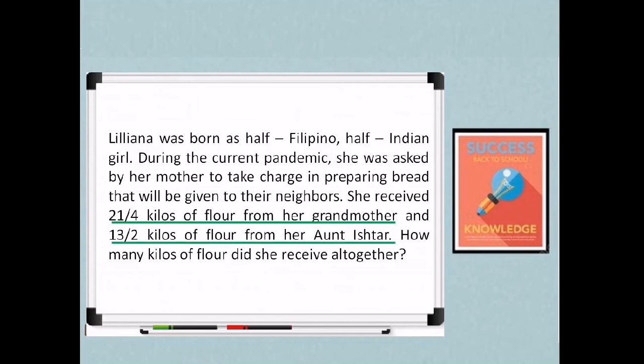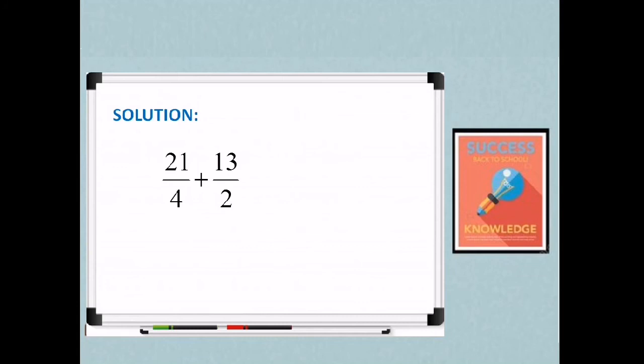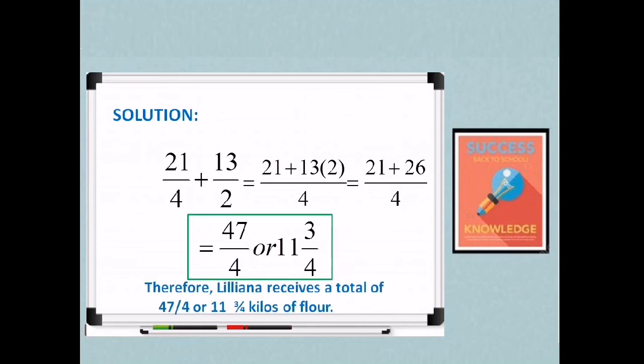So ang given natin ay 21 over 4, that will be the kilos of flour from her grandmother and 13 halves kilos of flour from her aunt Ishtar. So therefore, we need to add the 2 fractions given. That is adding dissimilar fractions. So for our solution, 21 over 4 plus 13 over 2 to get the total flour that she receives. Ang ating LCD ay 4. So we divide: 4 divides 4 is 1 times 21 is 21. Dun sa 13 halves, 4 divides 2 is 2, so yun yung imultiply natin sa 13. Then 21 plus 13 times 2 is 26 over 4. And then we just add, that is 47 over 4. Or ginawa lang natin mixed fraction, that is 11 and 3 fourths. So therefore, Liliana receives a total of 47 over 4 or 11 and 3 fourths kilos of flour. So that's one of the applications of adding fractions in real life situations.